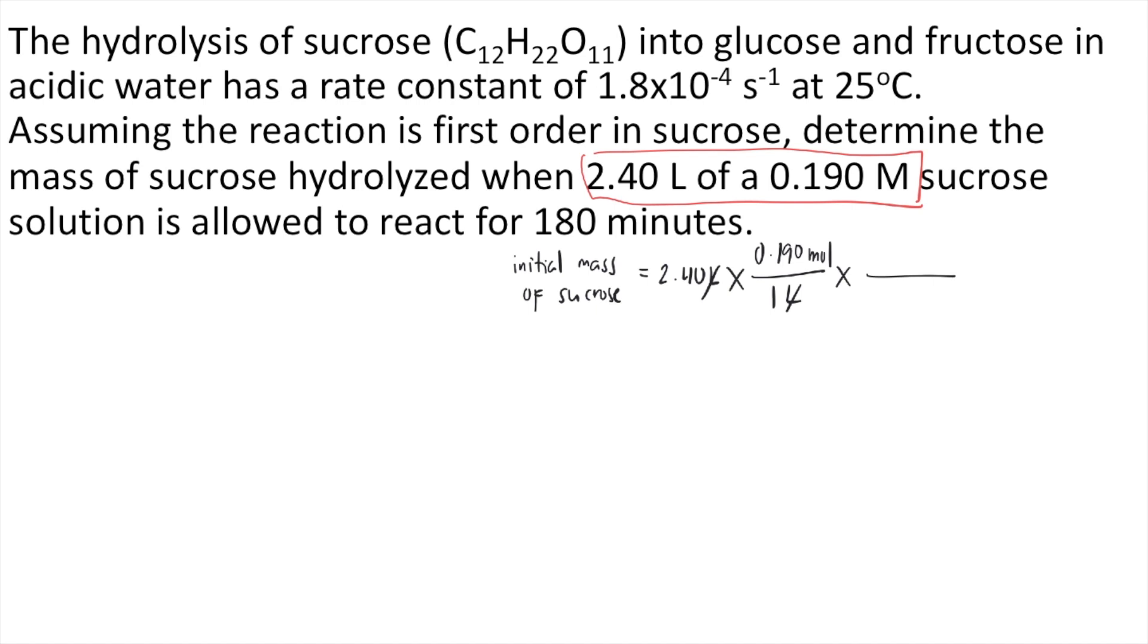Next, you convert moles of sucrose into grams of sucrose using the molar mass of sucrose. So if you solve that using your periodic table of elements, you know that the molar mass of sucrose is 342.296 grams per 1 mole. So the moles will cancel out. If you solve this in your calculator, the initial mass of sucrose is equal to 156.09 grams.